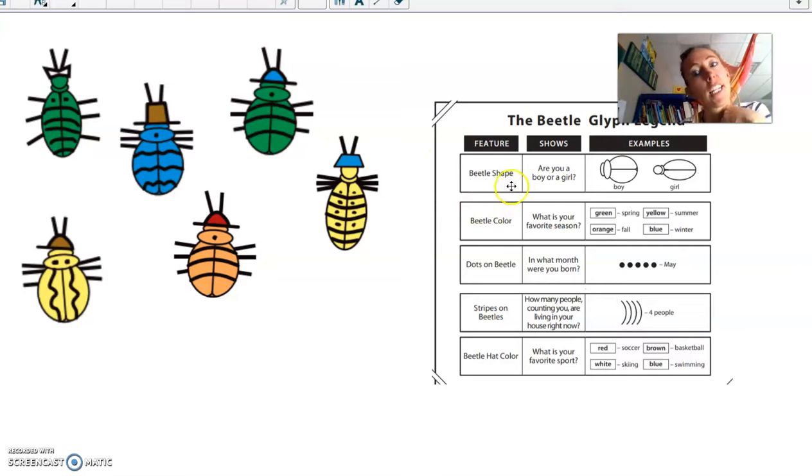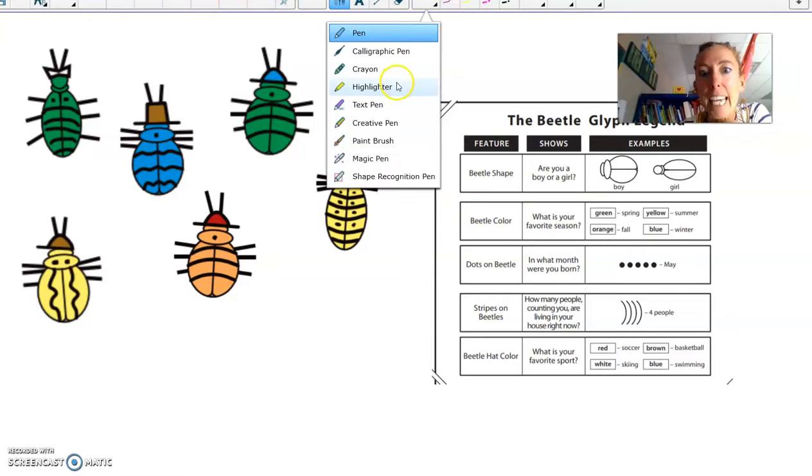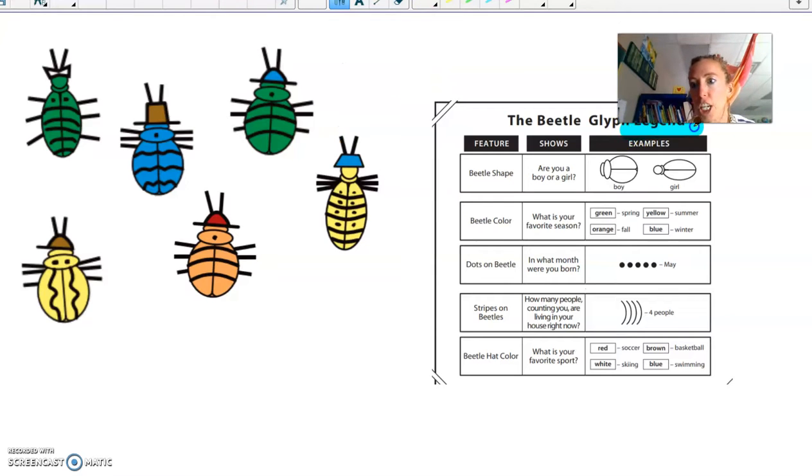So in class, you may have made a beetle that represents yourself. And in this particular key or legend over here, it tells us that the beetle shape shows if you're a boy or a girl. So if a beetle looks like this, it's a boy. If it's a beetle that looks like this, it's a girl.